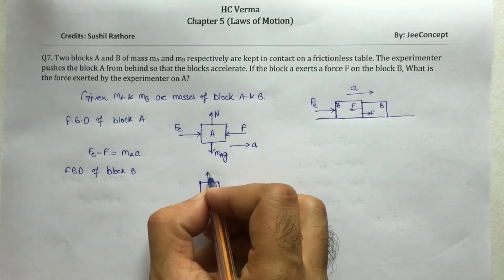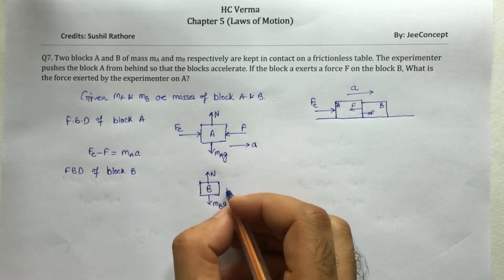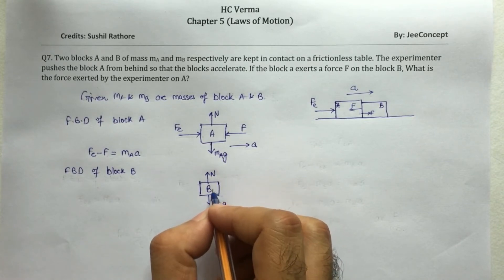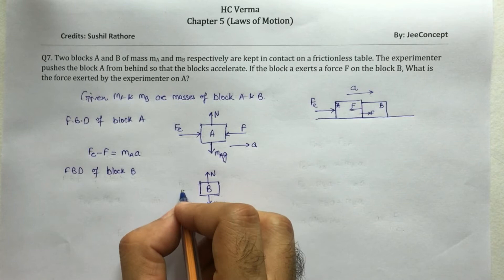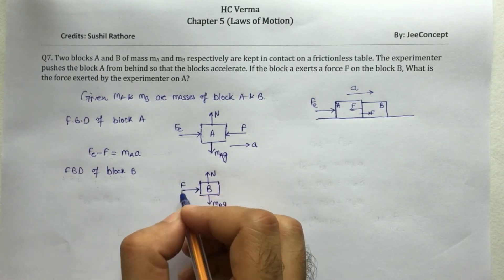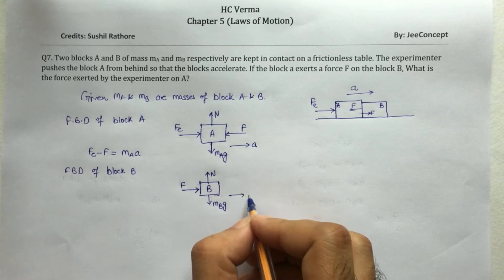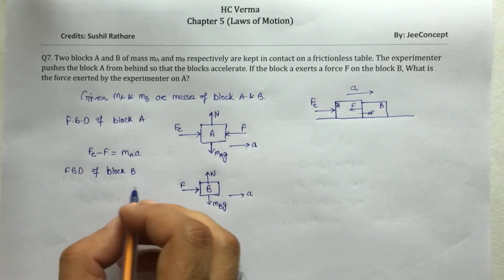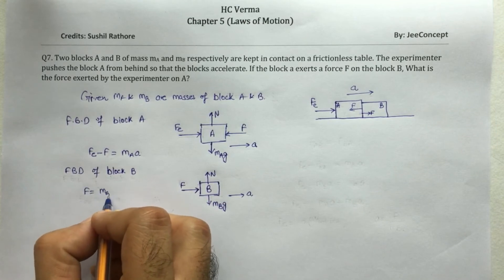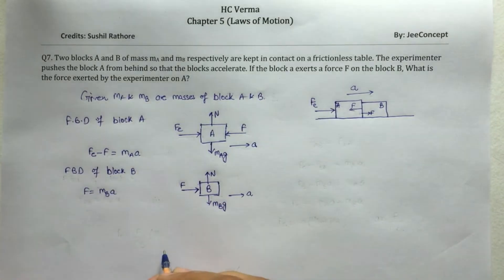Now for this block, there is only one force acting on this block is the force exerted by the A which is F. And the motion is in right hand direction. So the equation here is F is equal to mass into acceleration.